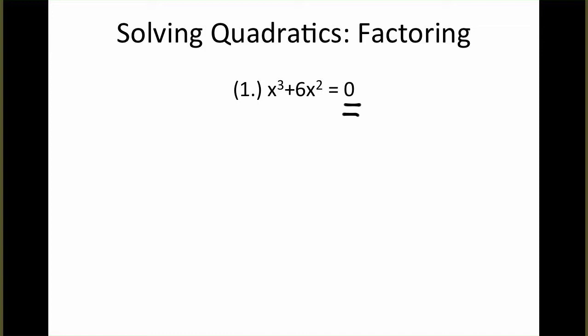So we just need to go about factoring x cubed plus 6x squared. Here, it's not a full quadratic, so instead what we'll do is just factor out the greatest common factor. Notice that each of these terms has an x squared inside of it, so we'll factor out an x squared. And when we take away an x squared from each piece, we're left with x plus 6.